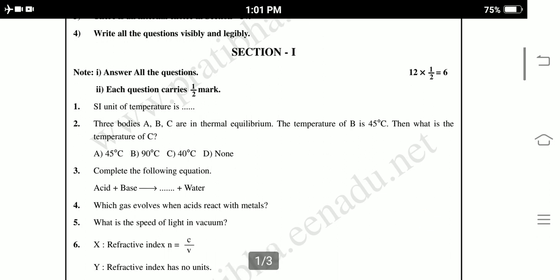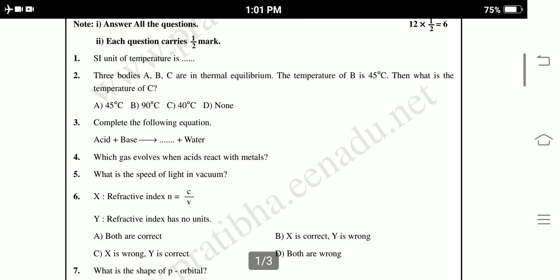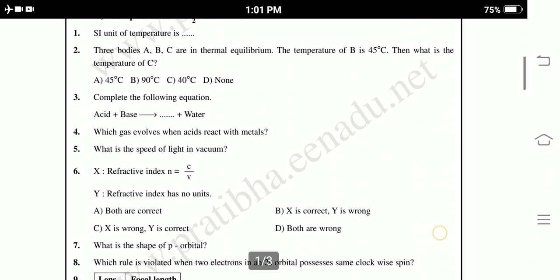What is the speed of the light in vacuum? X, refractive index N equal to C by V, refractive index has no units. Options: A, both are correct, B, X is correct Y is wrong, C, X is wrong Y is correct, D, both are wrong.